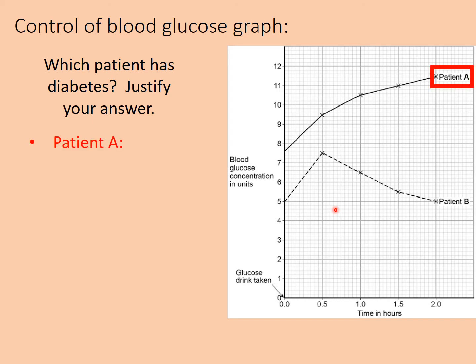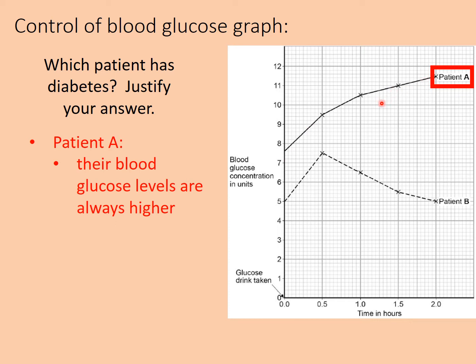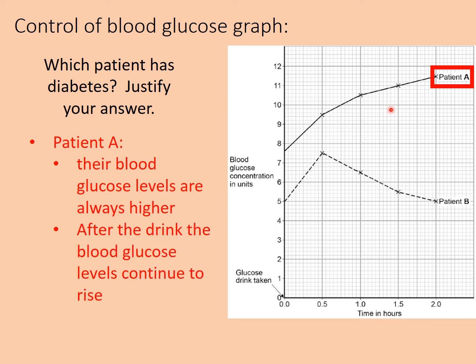Patient A has diabetes. Reasons include: their blood glucose levels are consistently higher than patient B's; after consuming the drink, blood glucose levels only rise with no attempt by the body to reduce them — cells aren't absorbing glucose and converting it to glycogen; and blood glucose levels never decrease, showing there is no control mechanism acting on those levels.